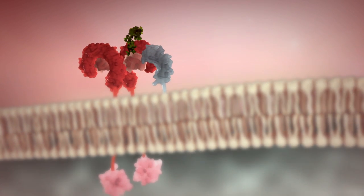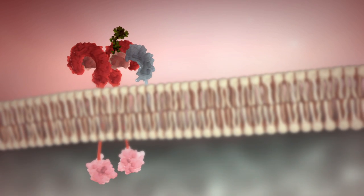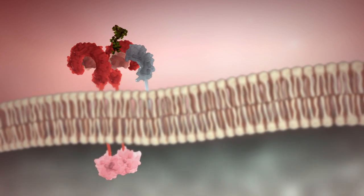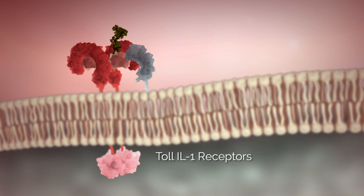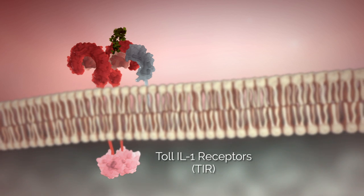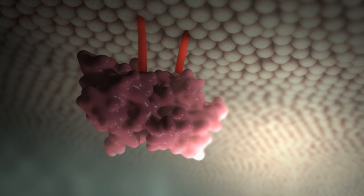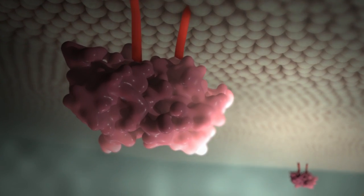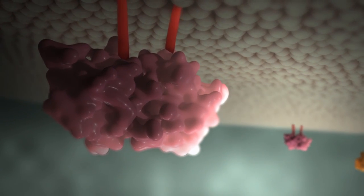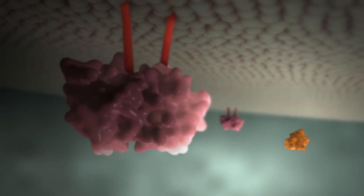The conformational change of the ectodomains initiates the dimerization of the cytoplasmic TOL-IL-1 receptor, or TIR domains. The TIRs provide a new scaffold that allows the recruitment of adapter proteins to form a post-receptor signaling complex.